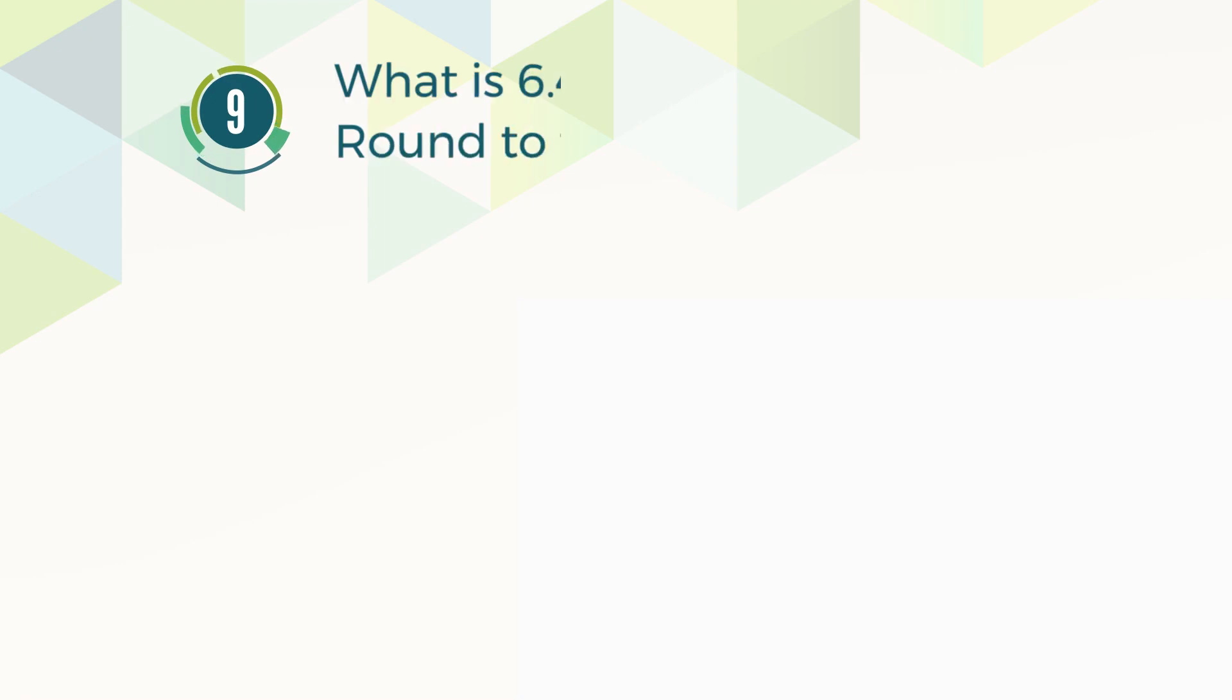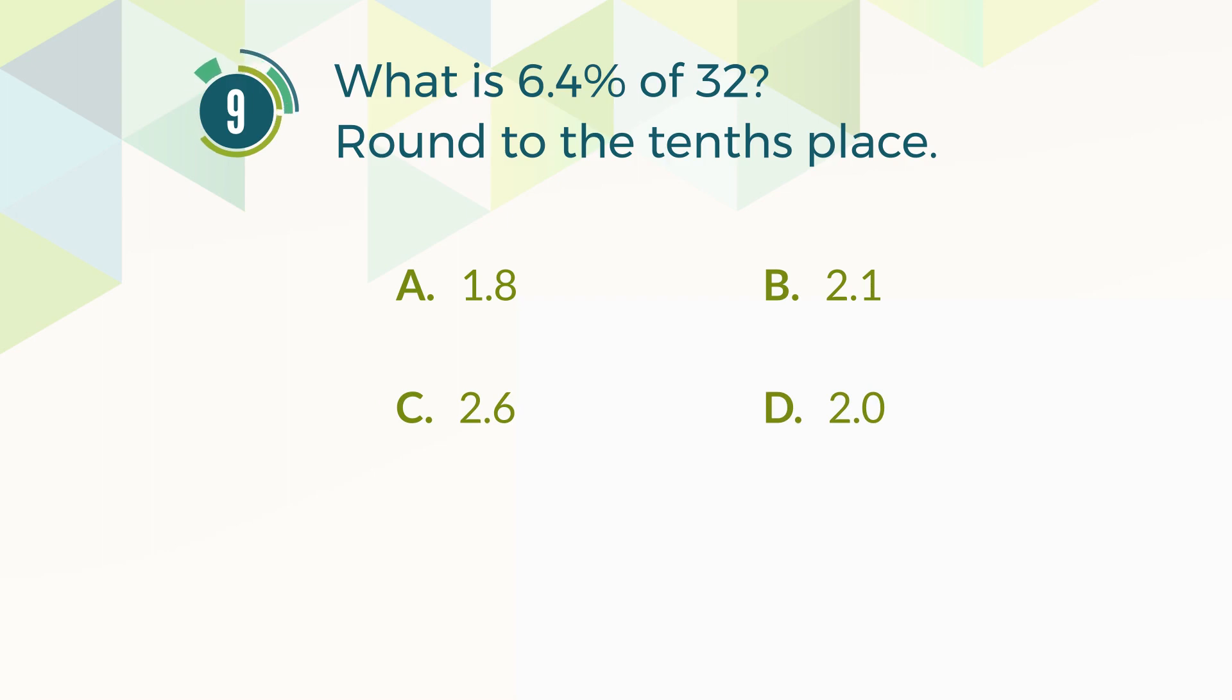Number 9. What is 6.4% of 32? Round to the tenths place. A: 1.8. B: 2.1. C: 2.6. D: 2.0. The correct answer is D, 2.0.